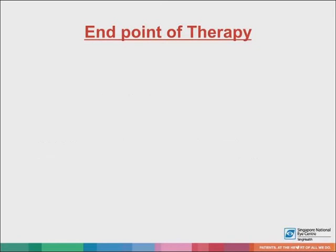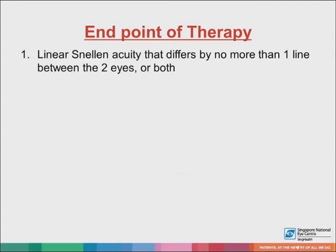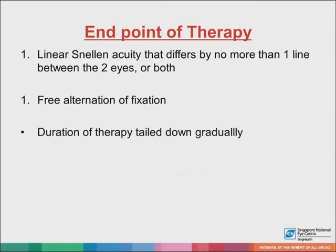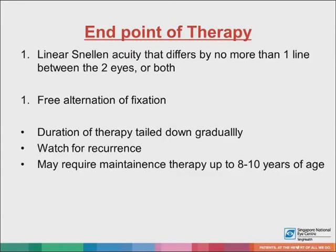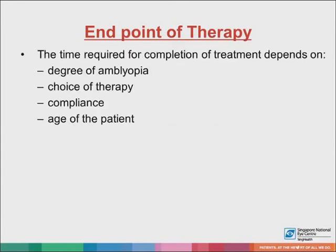When do you know to stop patching? Ideally, vision should be as good as the better-seeing eye. But in general, if the linear Snellen acuity differs by no more than one line between both eyes, patching can be tapered down. In a child with strabismus, when they have free alternation of fixation, patching can also be tapered down, but gradually over a period of time, watching for any signs of recurrence. Some children may require maintenance therapy up to eight to ten years of age. The time required for completion of treatment depends on the degree of amblyopia, the choice of therapy, compliance to treatment, and the age of the patient.